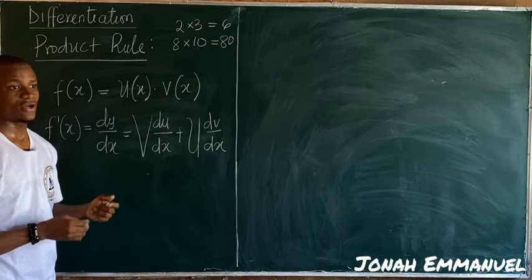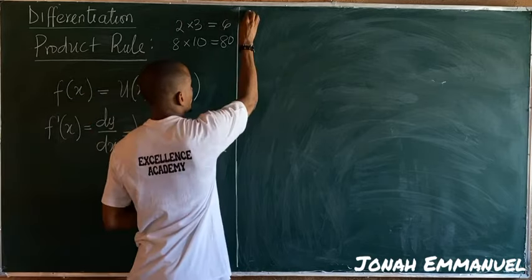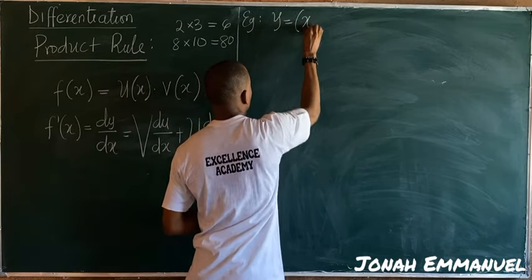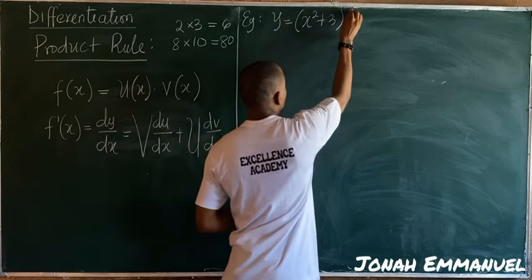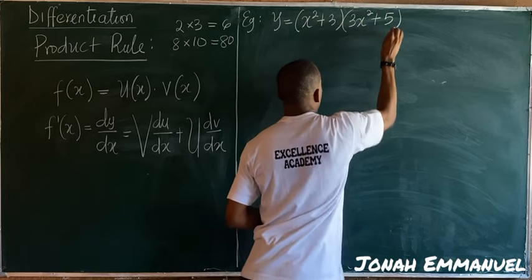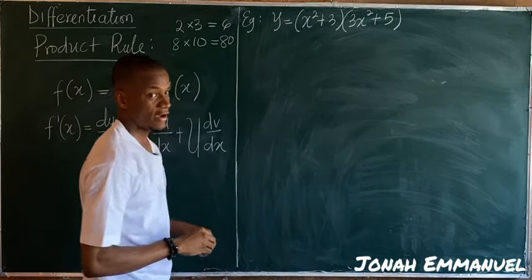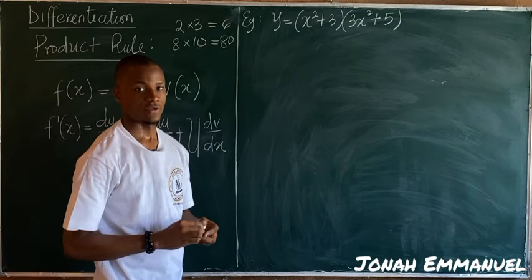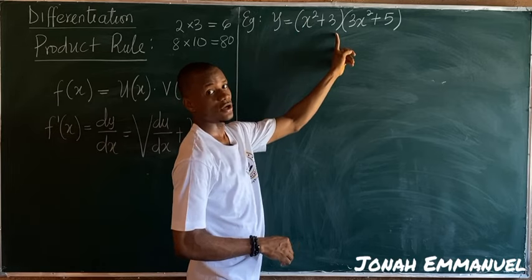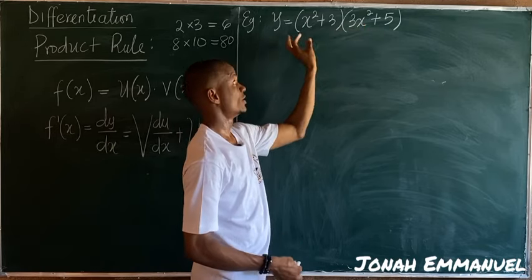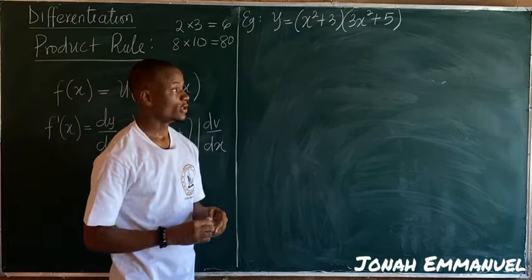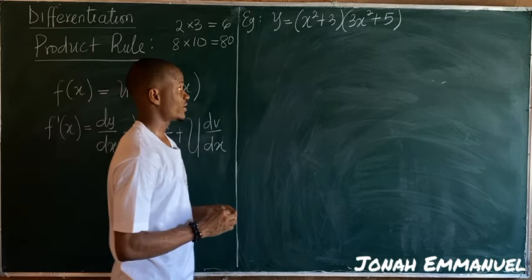Let's take a typical example. Let's say y equals (x² + 3)(3x² + 5). This becomes a product rule differentiation question because x² + 3 is multiplying 3x² + 5. Since they are multiplying, it becomes a product rule differentiation problem.